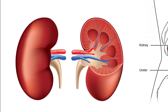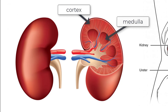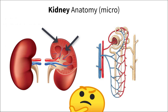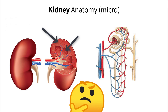Other important structures to note at the organ level are the outer cortex and the inner medulla, which houses structures called renal pyramids. Taking a closer look at the anatomy within the cortex and medulla, you can see that things get a bit more complex.